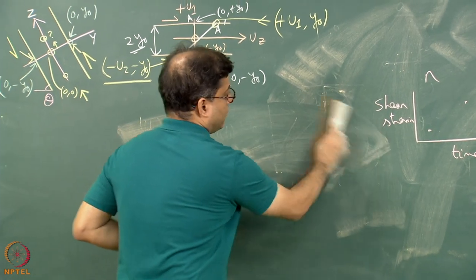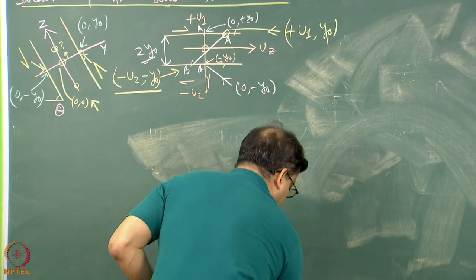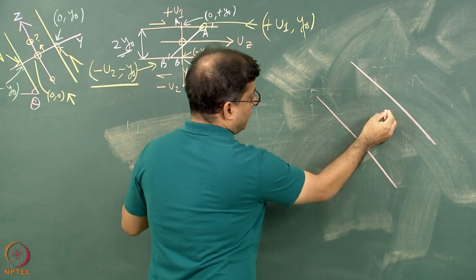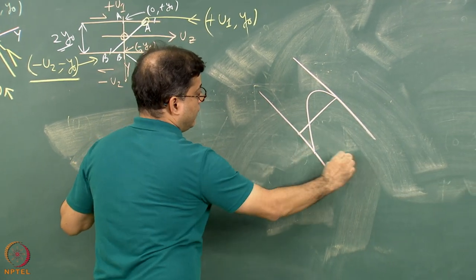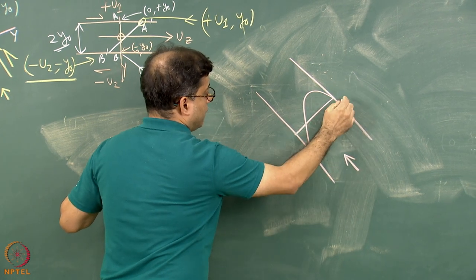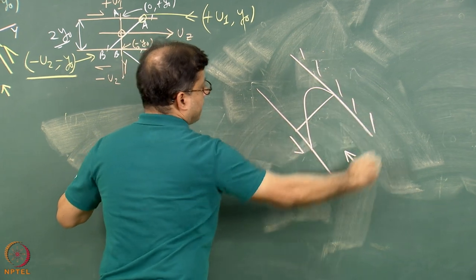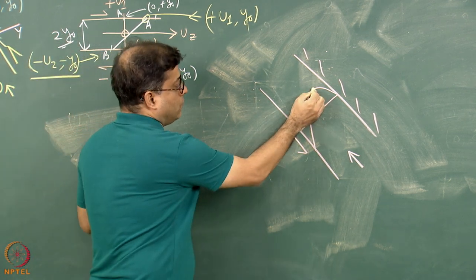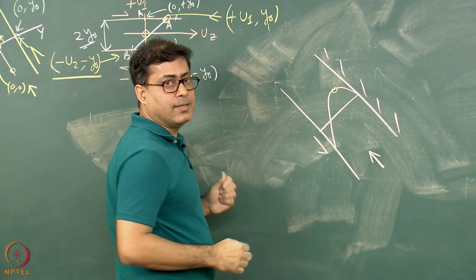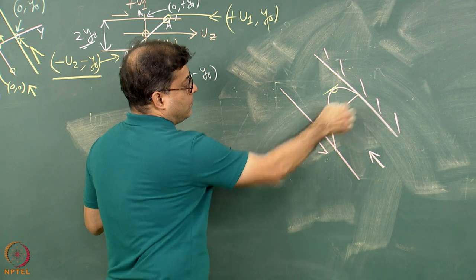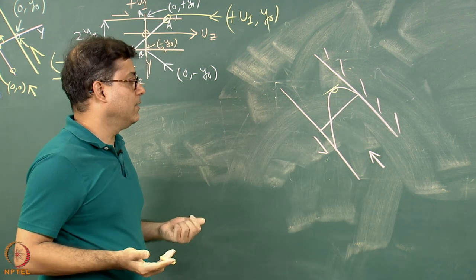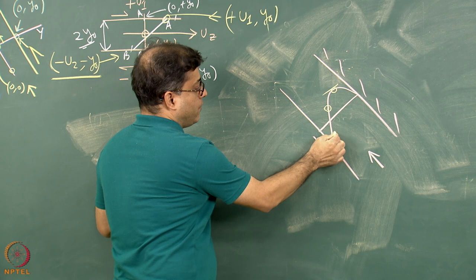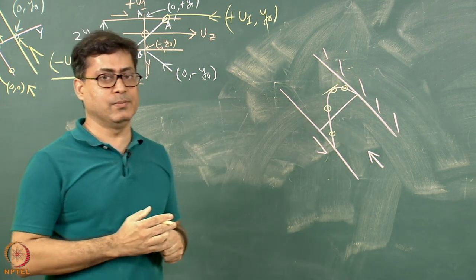For combined Couette and Poiseuille flow: consider the combined displacement profile. At the vertex, drawing a tangent shows it is parallel to the boundary line, so there is no shear strain. The vertex maintains zero shear strain with progressive time. For all other points, the same principle applies — following the same process from the Poiseuille and Couette analyses to determine shear strain at each point.